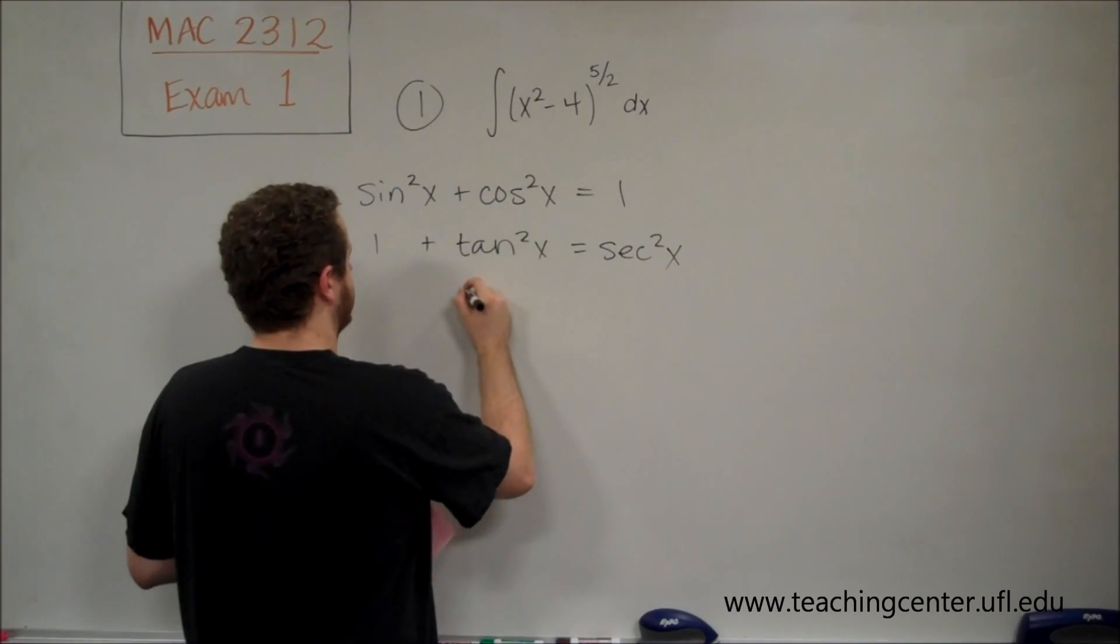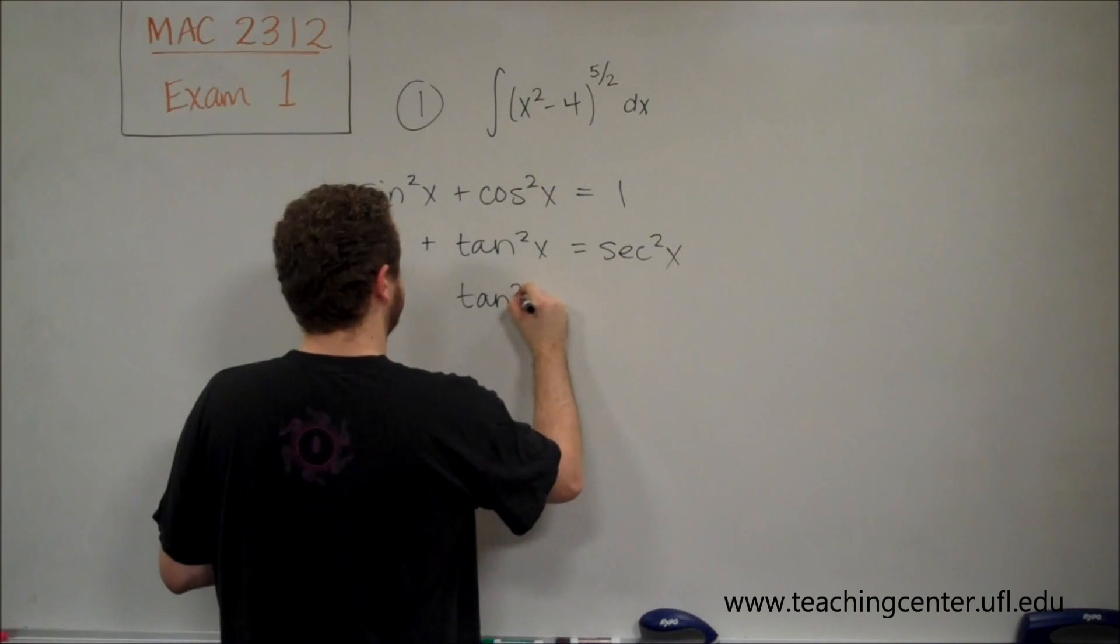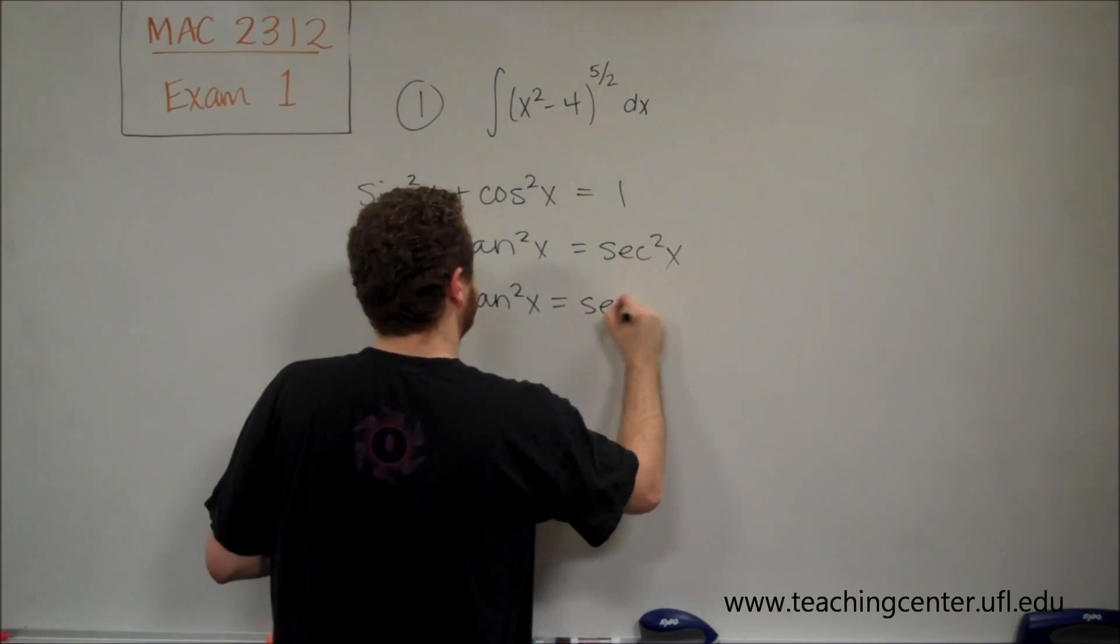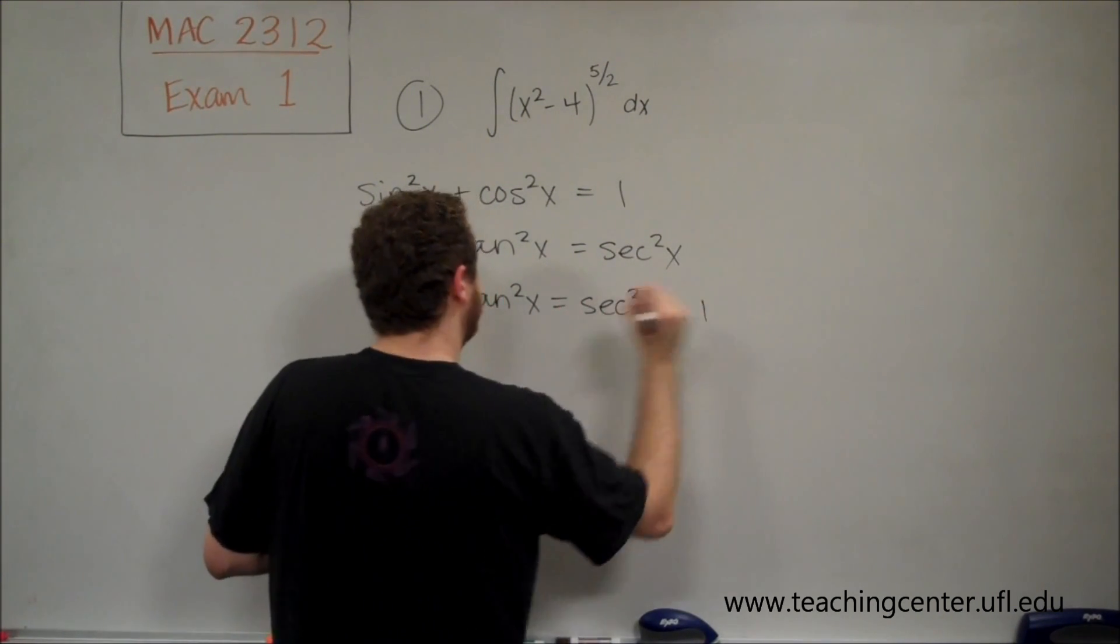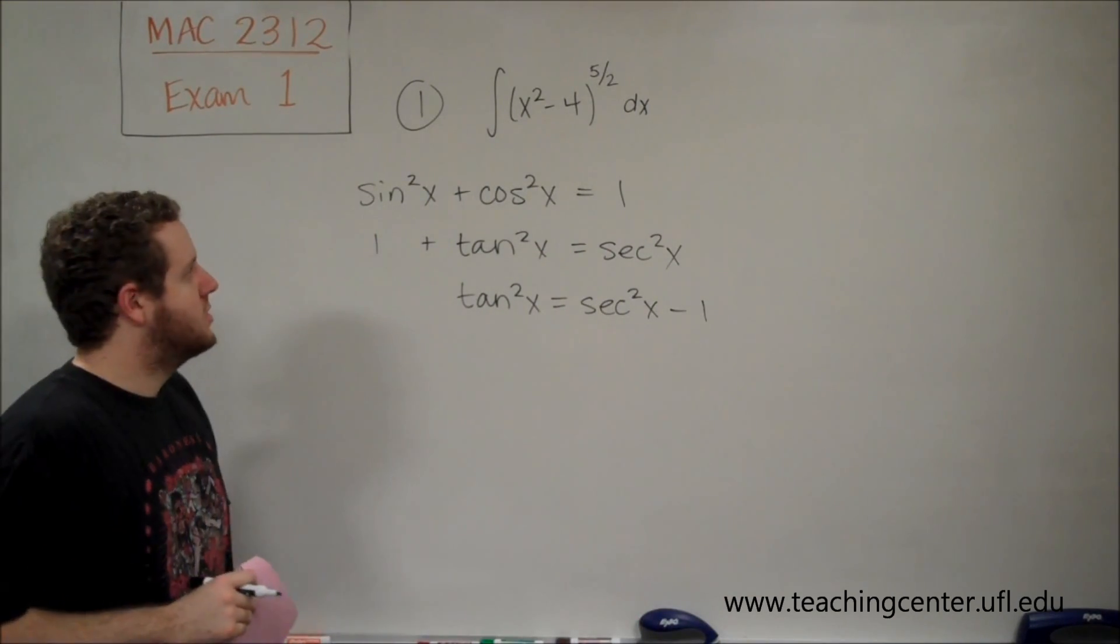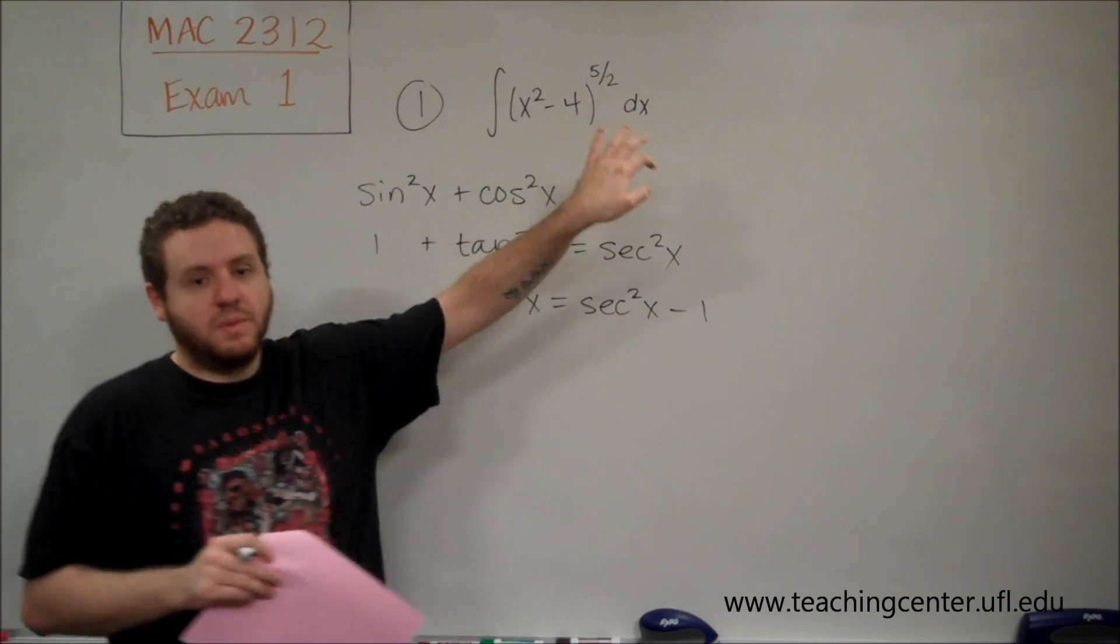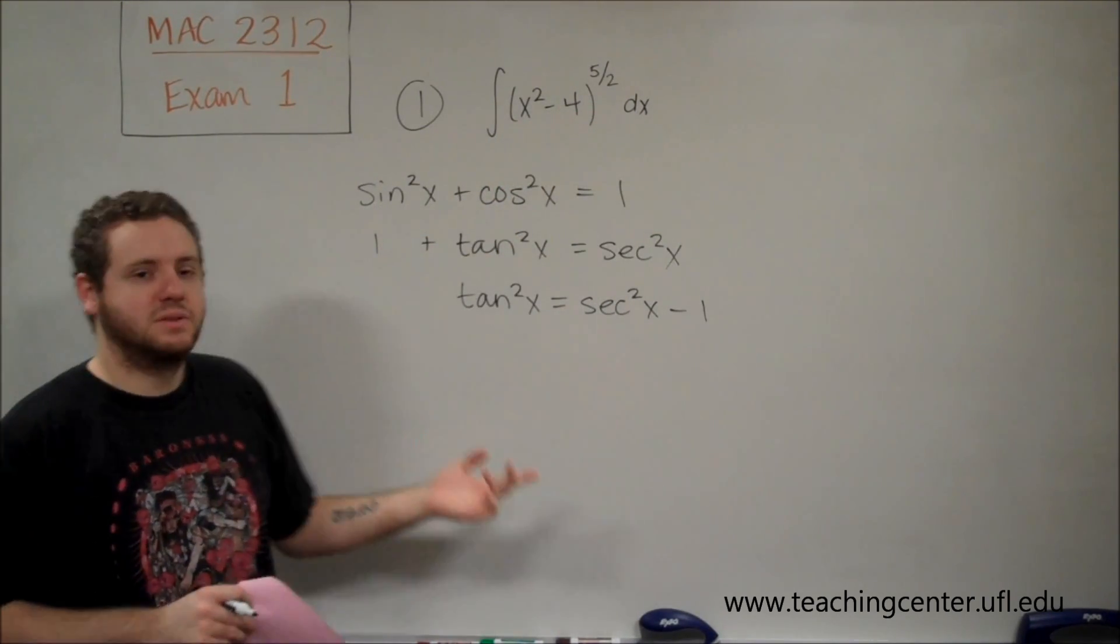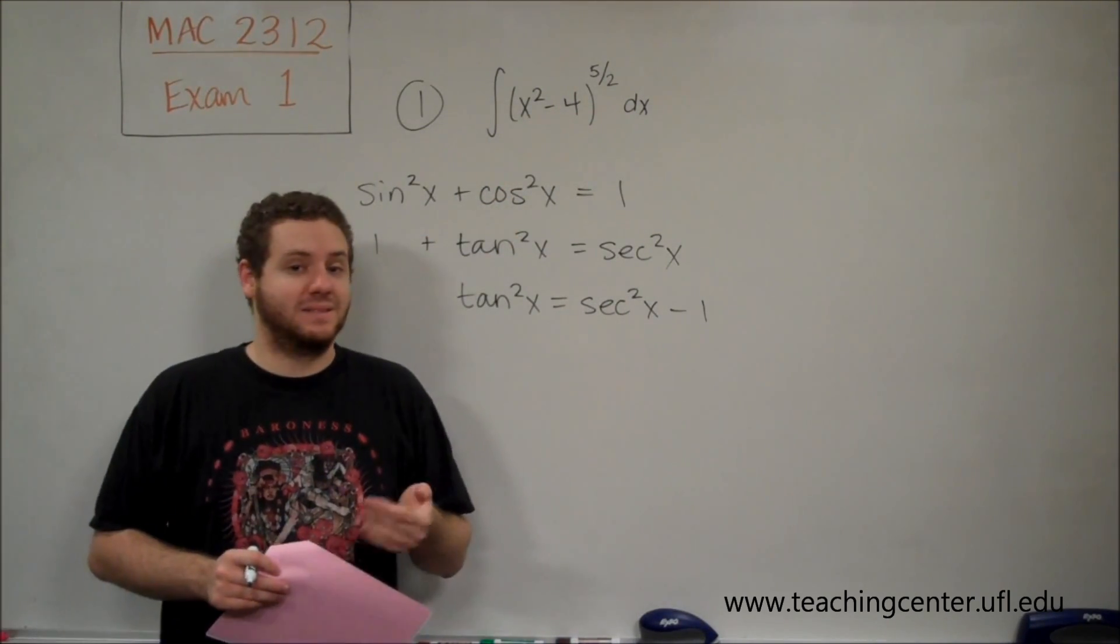is that if we just subtract 1 in this second one and we get that tangent squared is secant squared minus 1. So if this were secant squared minus 1, then we could just substitute it with tangent and that would be a nice easy substitution.